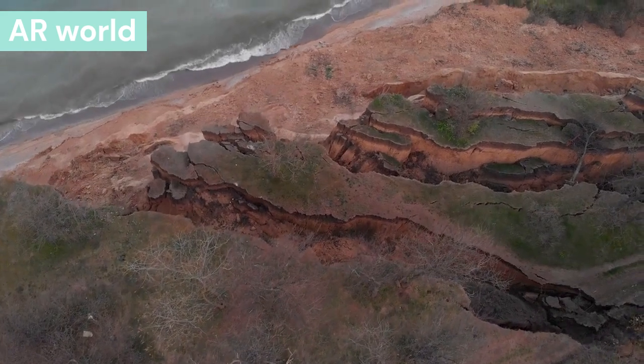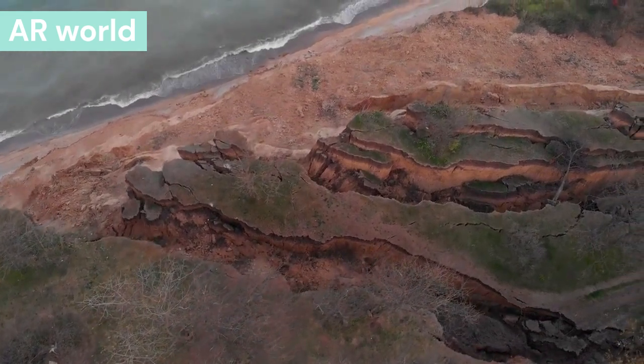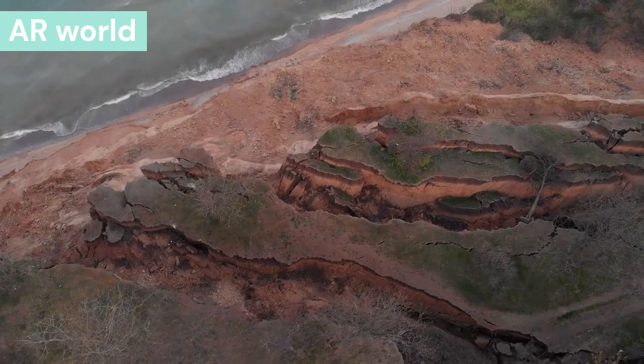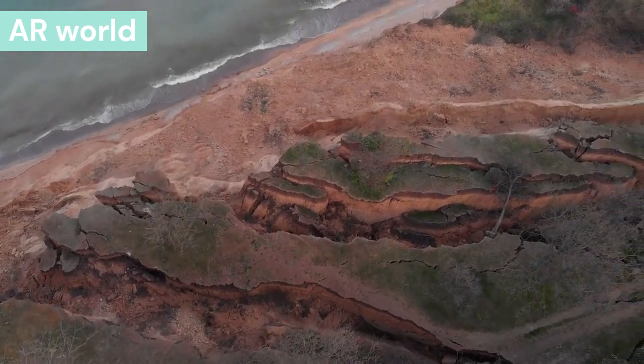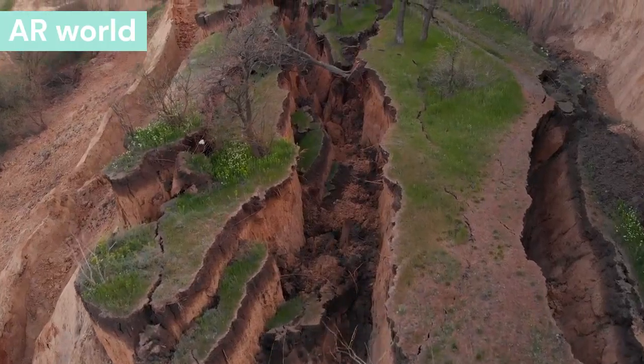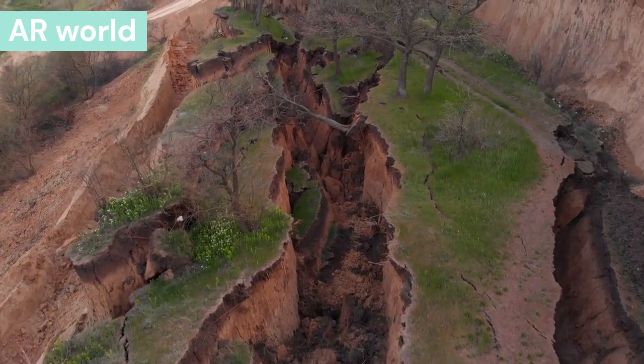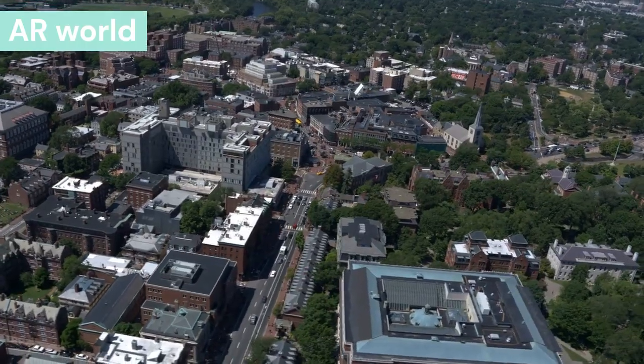Reverse fault: This is the reverse of a normal fault where the rock above the fault plane or the hanging wall slides up relative to the foot wall below the fault plane. Reverse fault is formed at the convergent boundary, where the plates meet coming towards each other.